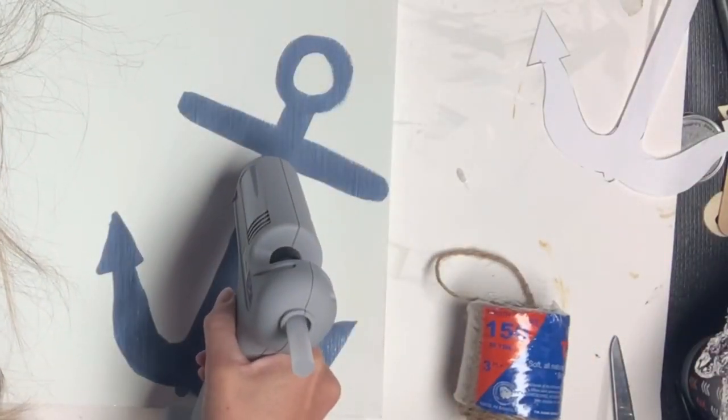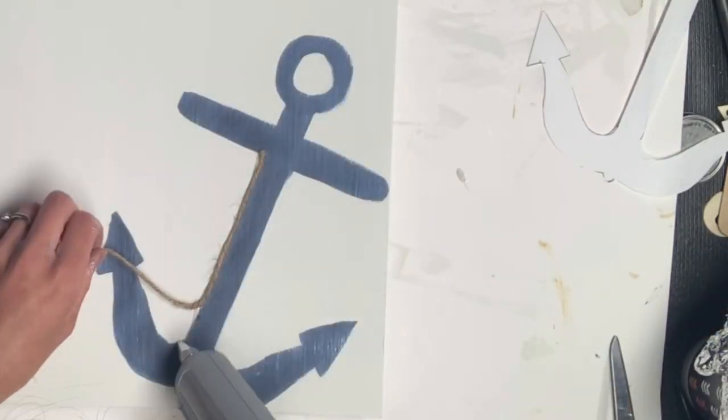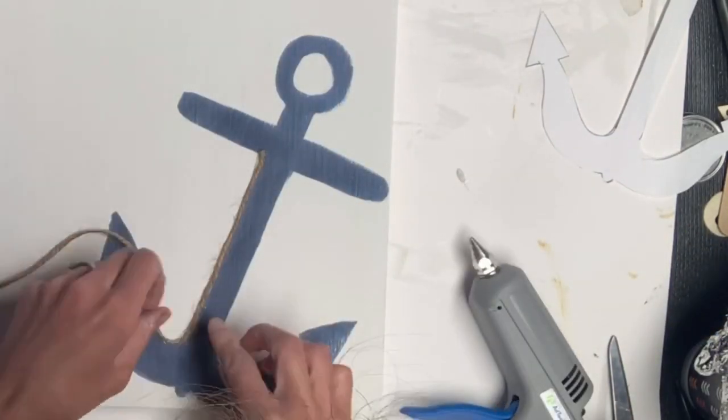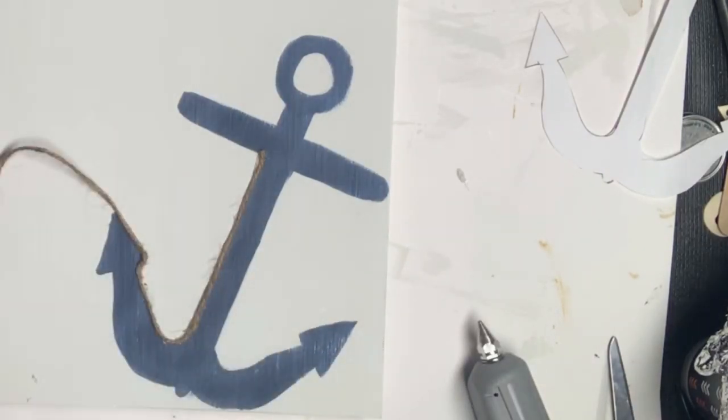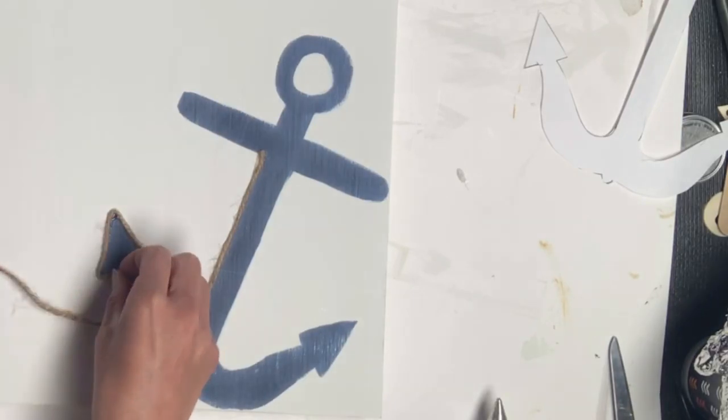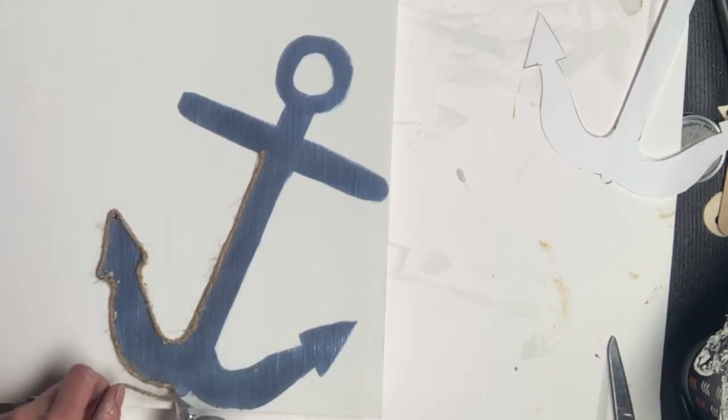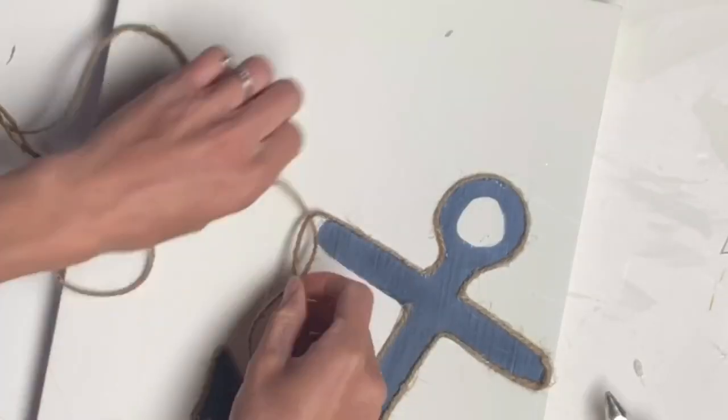Once that was filled in and dry I took my hot glue gun and some jute and I lined the outside of the anchor with the hot glue and then I laid my jute on top of it. I did this to the entire anchor.